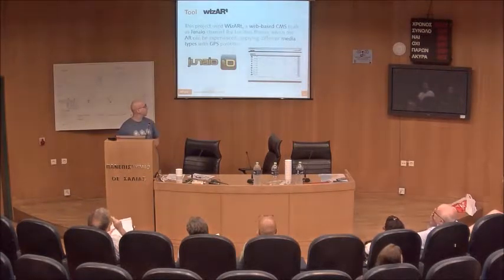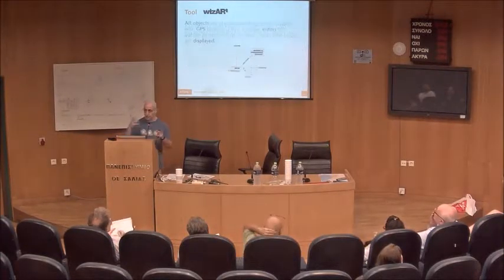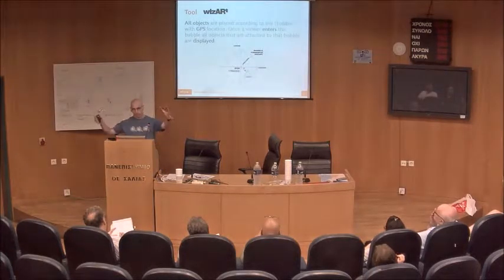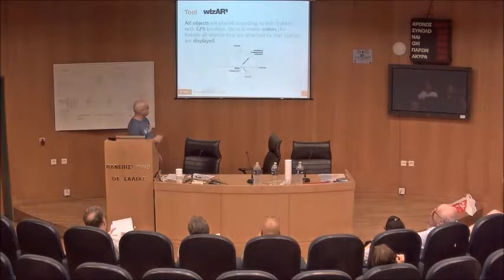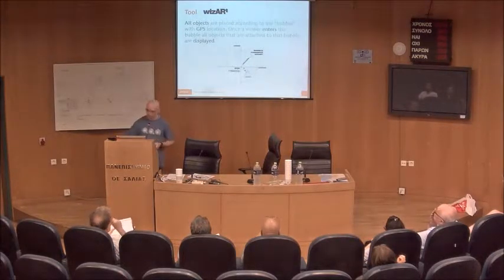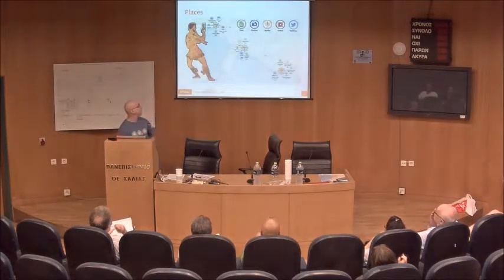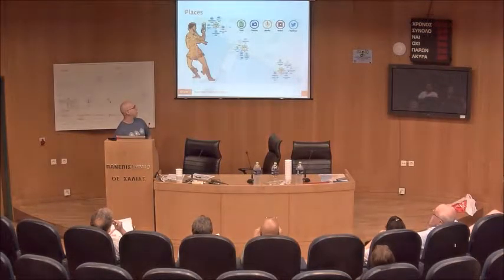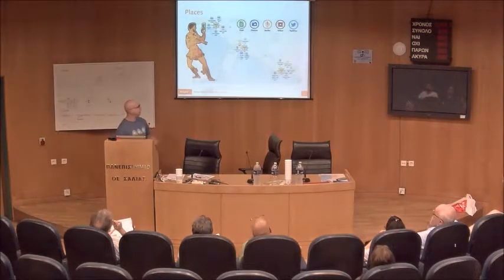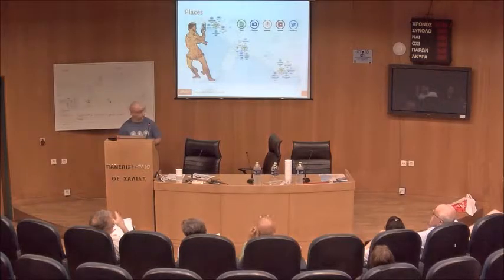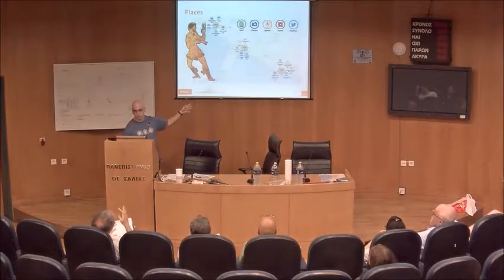How does it work? Basically you have a GPS position and you have some bubbles around. When you enter these bubbles, the bubble contains the media you've placed. Here in Volos I chose three locations: one in front of here at the university, one at the Argos boat, and one at the corner of the city hall and the port. I didn't have much time, so I picked five files per spot.